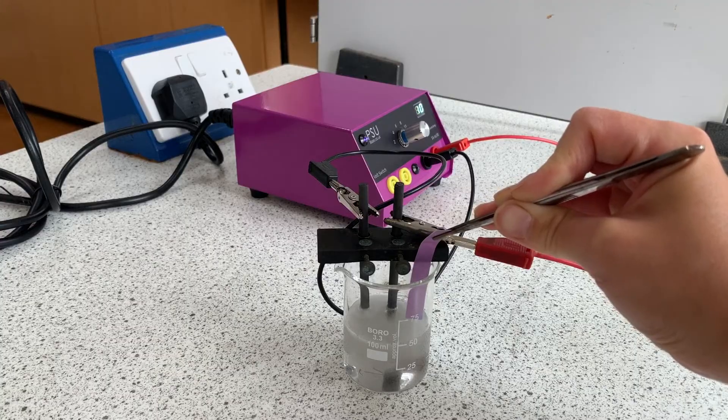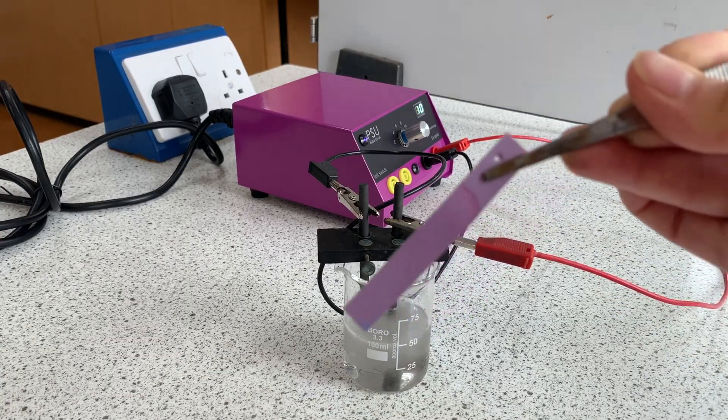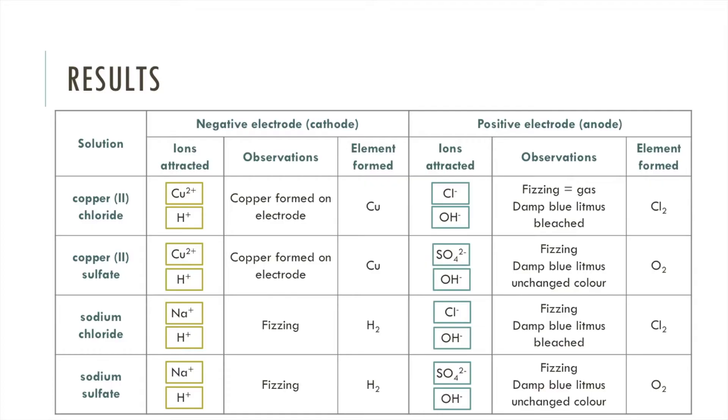Here we can see blue litmus paper is unchanged by this gas because it's not chlorine. So filling in our observations, we have fizzing at both electrodes. At the negative electrode there was no formation of sodium, there was a gas, so that was hydrogen. At the positive electrode we saw that blue litmus paper was not bleached, so it was not chlorine given off, and since there was no halide ion present in that solution, the gas given off was oxygen.